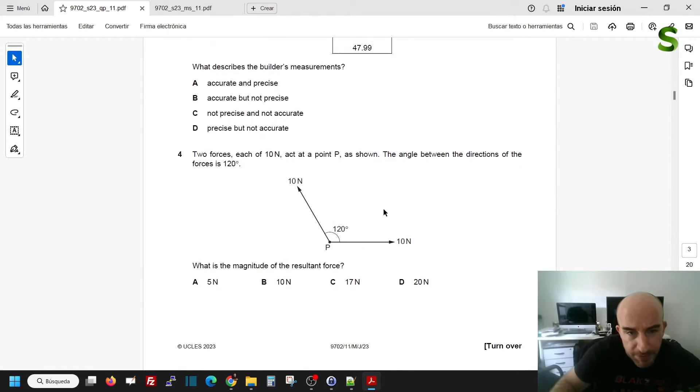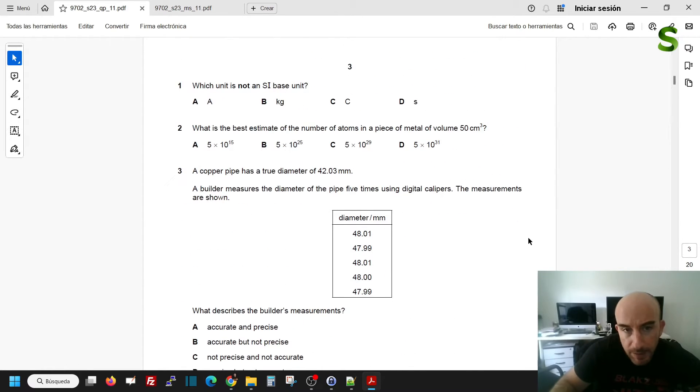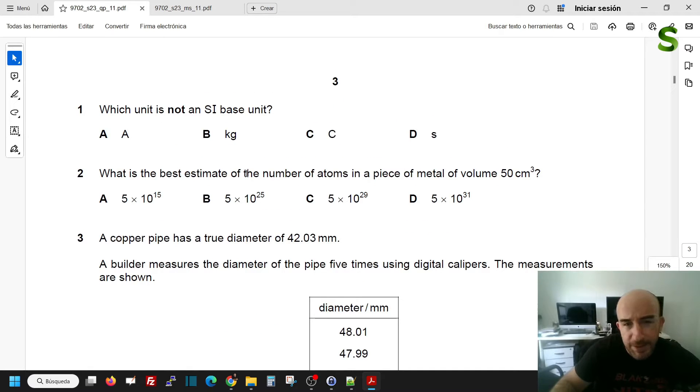So the question exactly is question number two of this exam: what is the best estimate of the number of atoms in a piece of metal of volume 50 centimeters cubed? They give you numbers, and that's it. If you see the solution of this on the internet, some people who've posted the solutions expect you to know the density of a metal, the weight of a metal, or several other things. But I wanted to know exactly what Cambridge expected in this question, and so I went directly to the notes that you have after an exam.